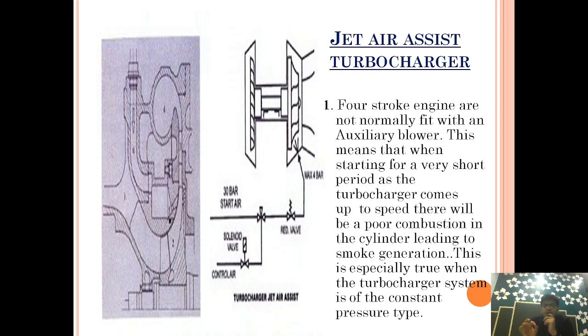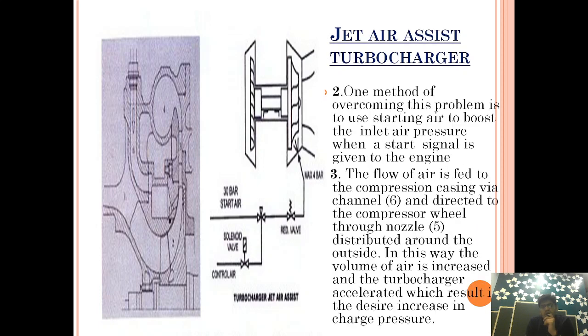After the engine has built up its rated RPM, combustion will be proper and there will be no black smoke. But while the engine is starting, there will be a gap. To compensate for that gap, we use jet air. This jet air is compressed air supplied from the air starting system of the main engine.